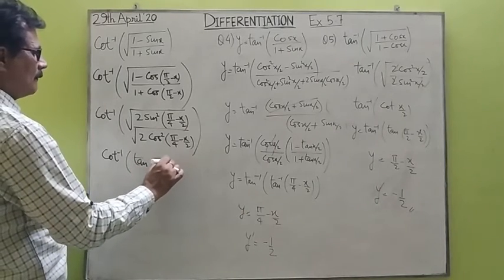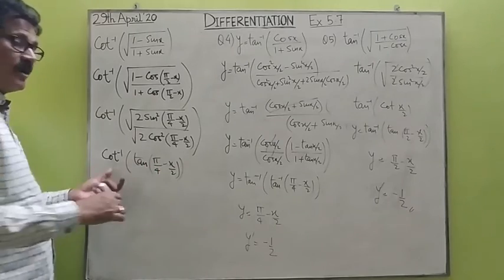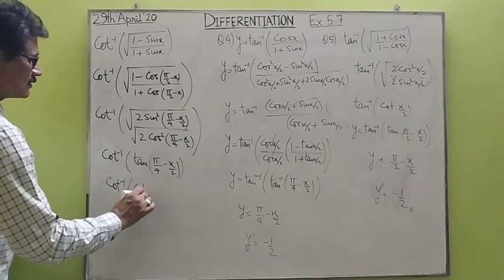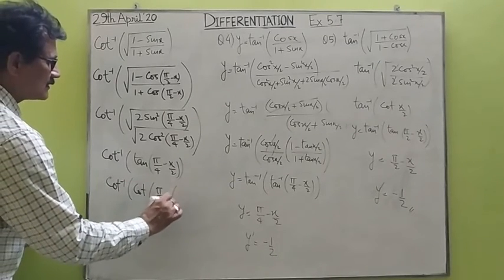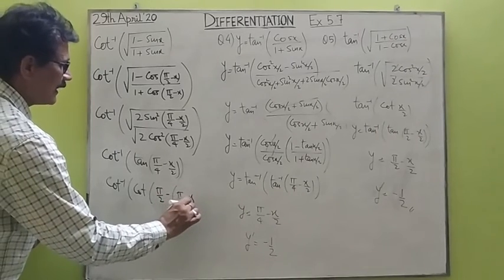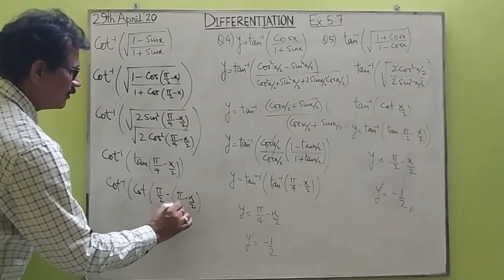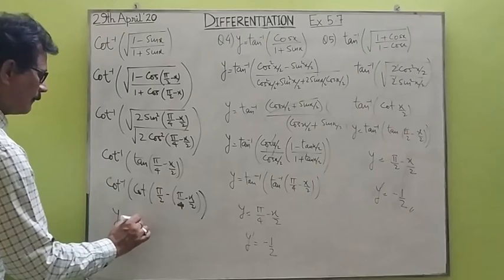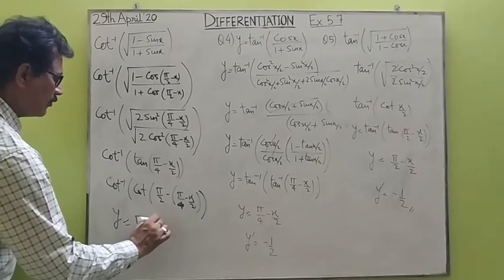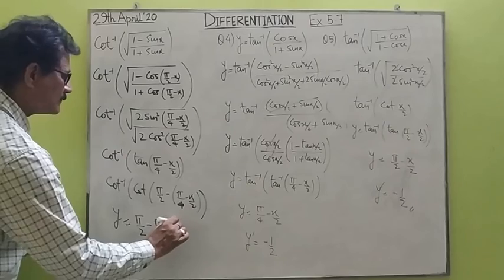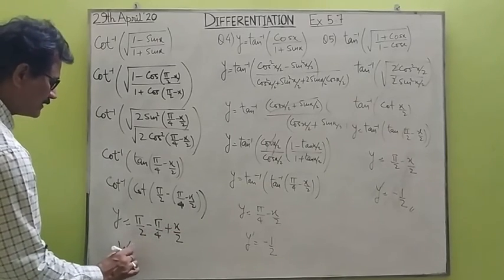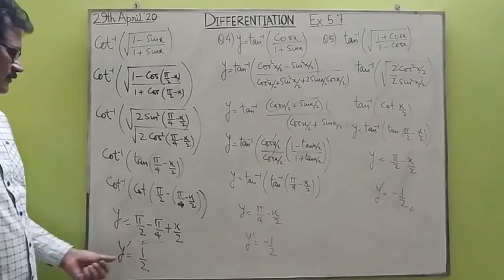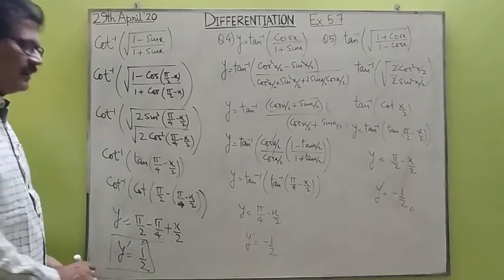Now using complementary conversion again, we write this as cot inverse of cot(π/2 minus (π/4 minus x/2)), which is cot inverse of cot(π/4 plus x/2). So y turns out to be π/4 plus x/2. Finding the derivative, the constants give 0 and the derivative of x/2 is 1/2. So the derivative of this function turns out to be 1/2.